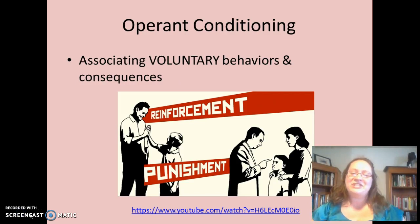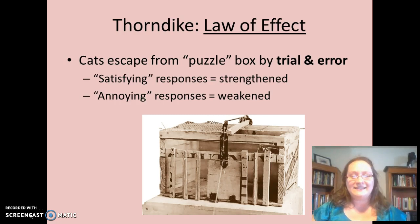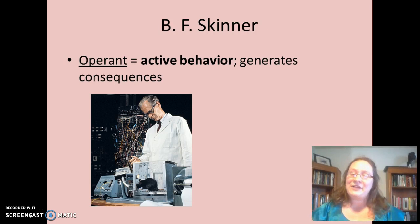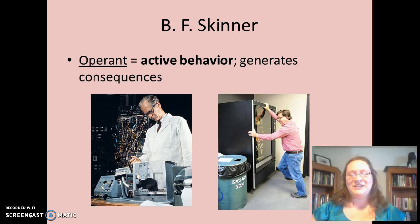Operant conditioning involves voluntary behaviors, and we're going to talk about reinforcement and punishment. Thorndike put cats in a puzzle box to see how they would escape through trial and error. The things the cats did that improved their chances of getting out, they continued to do; those that didn't, they stopped doing. B.F. Skinner built on Thorndike's work and called operants any active behavior that generates a consequence. For example, if you put a dollar into a vending machine and it doesn't give you anything, but you shake it and out pops your Snickers bar, you're going to be more likely to shake it in the future.